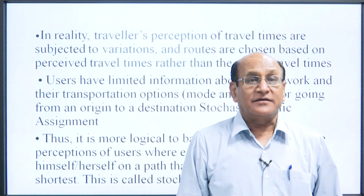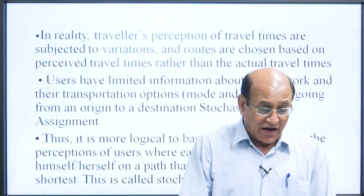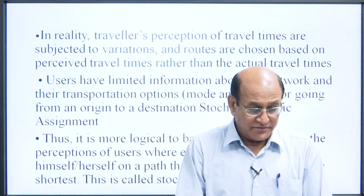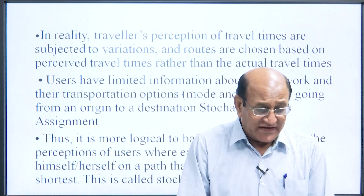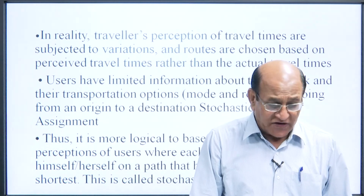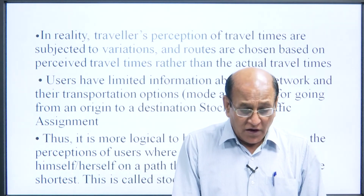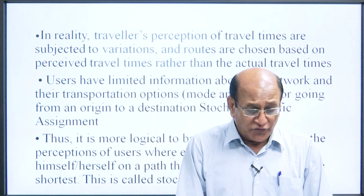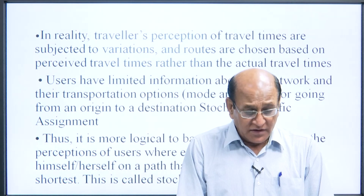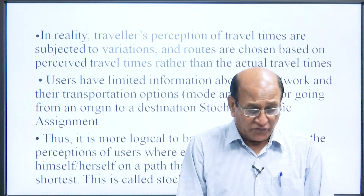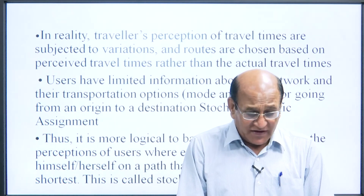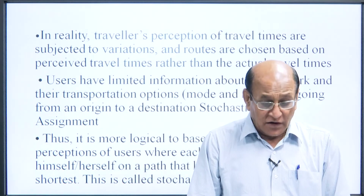In reality, perception of travel time is subject to variation and routes are chosen based on perceived travel time rather than actual travel times. Users have limited information about the network and their transportation options — modes or routes for going from origin to destination. Thus it is more logical to base the equilibrium on the perception of users, where each user assigns himself or herself to the path that he or she perceives as the shortest. This is called stochastic equilibrium.